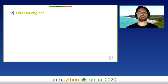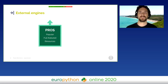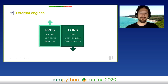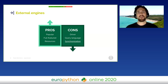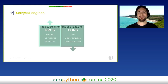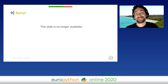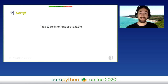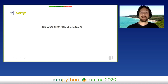We can say various things about external engines. On the good side, they are very popular, there are a lot of features, and you can find a lot of online resources about that. On the bad side, you always need a driver to use them from Django, you have to use their specific query language, and it's common to have a synchronization problem. This is similar to what happens in e-commerce when you find a product in search results but it's not available anymore when you click on it — because search results are fed from the search engine, which is not already synchronized with the database.